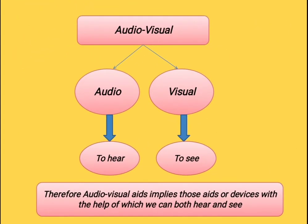The word audiovisual is the combination of two words — one is audio and the other is visual. Audio means to hear and visual means to see. Therefore, audiovisual aids implies those aids or devices with the help of which we can both hear and visualize the information.